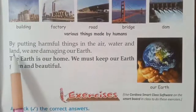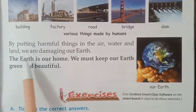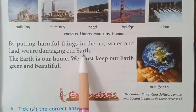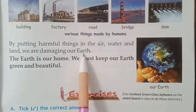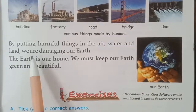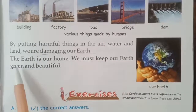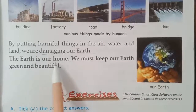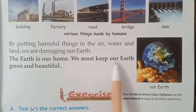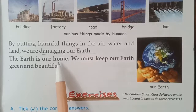Humans have brought many changes to earth. They have, for example, built buildings, factories, roads, bridges, and dams on earth. By putting harmful things in the air, water, and land, we are damaging our earth. The earth is our home — we must keep our earth green and beautiful.